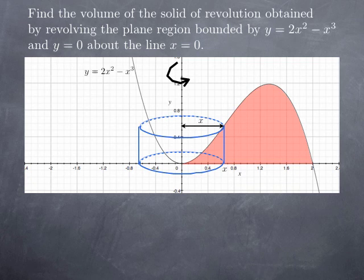The radius here is the distance from the y-axis to x equals constant — that is, from x equals 0 to x equals x — so this distance is simply x. For the height, you see that for this particular x, the corresponding height is the value of the function at that x, in other words 2x squared minus x cubed.